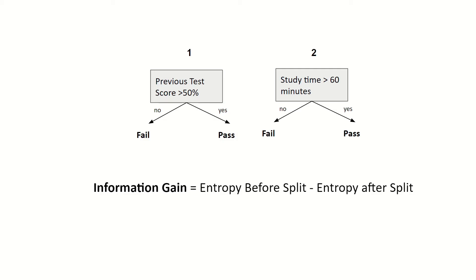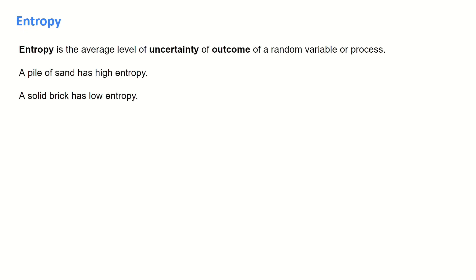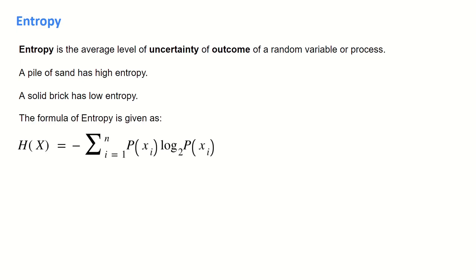What exactly is entropy? Entropy is the average level of uncertainty of outcome of a random variable or process. A pile of sand has high entropy — for example, if I was to drop a pile of sand, can you predict where all the grains would go? That seems quite difficult. There's a high average level of uncertainty, and so a pile of sand would have high entropy.